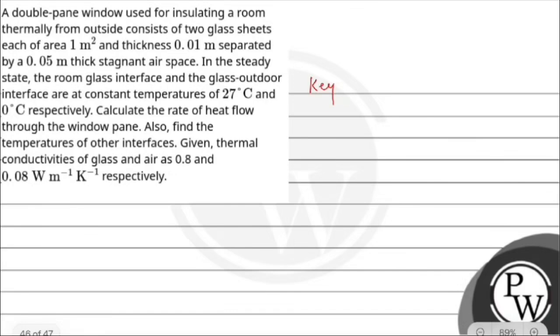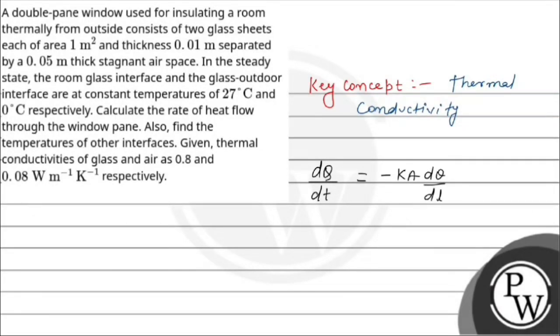So the key concept used here is thermal conductivity. If you know the thermal conductivity, the rate of heat flow from one surface to the other surface equals minus k A dθ/dl. This is dQ/dt, that is heat current, that is rate of heat flow.